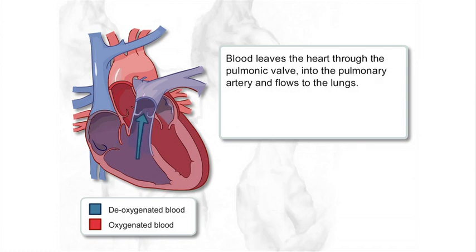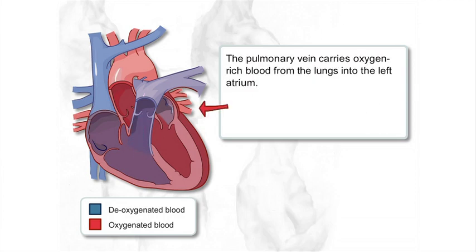Blood leaves the heart through the pulmonic valve into the pulmonary artery and flows to the lungs. The pulmonary vein carries oxygen-rich blood from the lungs into the left atrium.